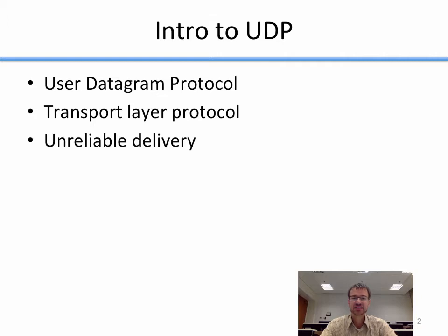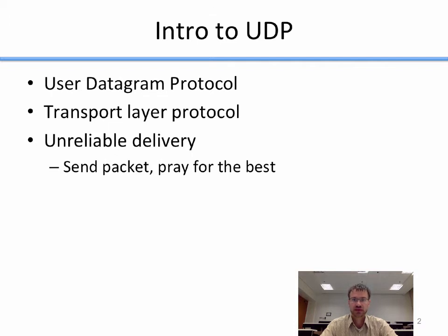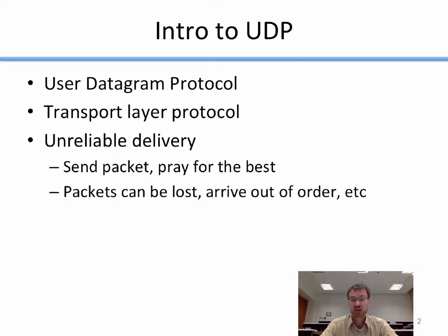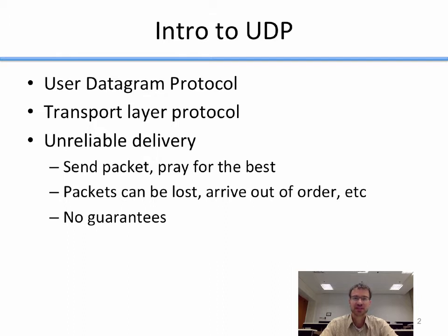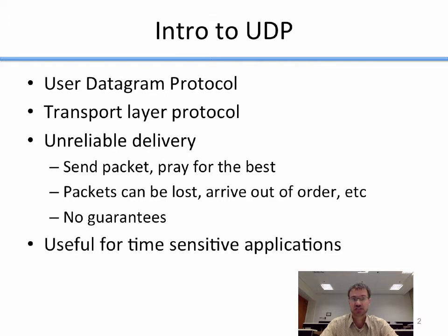The difference is that UDP provides unreliable delivery, which means that you send a packet and you pray for the best. Packets can be lost, they can arrive out of order. There are no guarantees about what will happen to your packet when you try to send it. TCP, on the other hand, will guarantee that your packets will arrive in order. UDP provides absolutely no guarantees — if a packet's lost, it's lost.